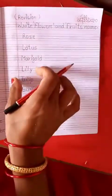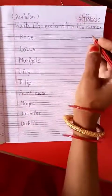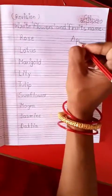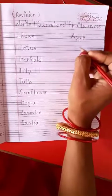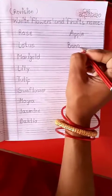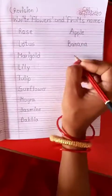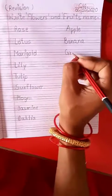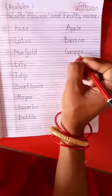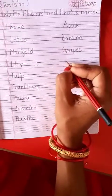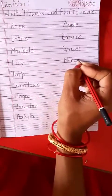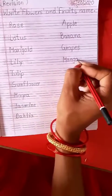You have written the flower names. Now on this side write the fruit's name. Clear? So write: A, P, P, L, E. Apple. B, A, N, A, N, A. Banana. G, R, A, P, E, S. Grapes. M, A, N, G, O. Mango.